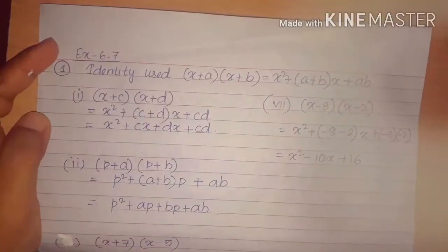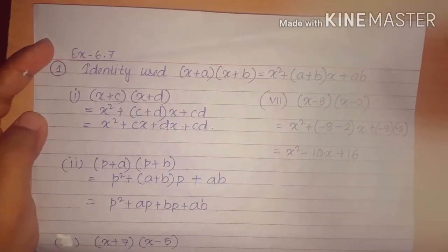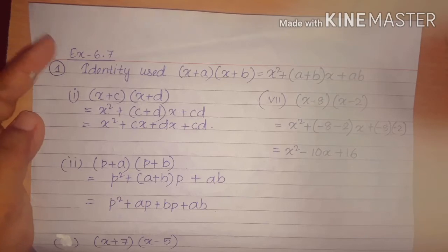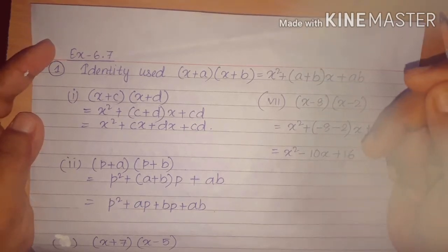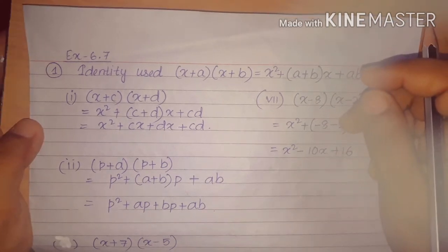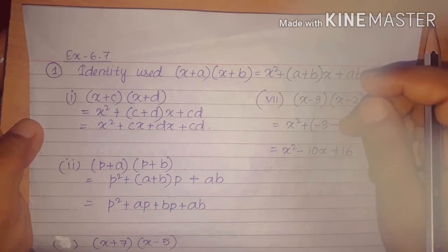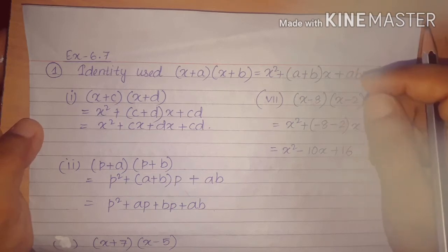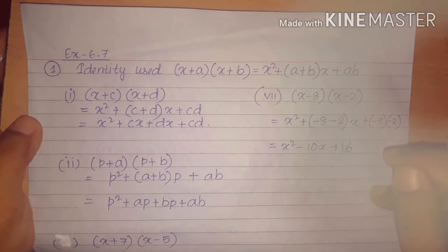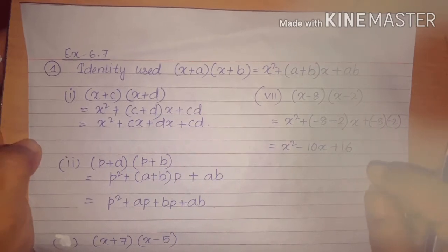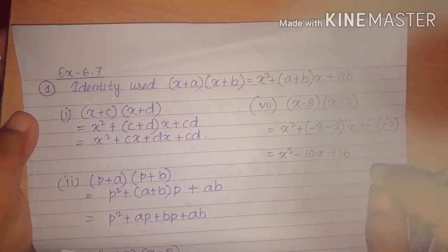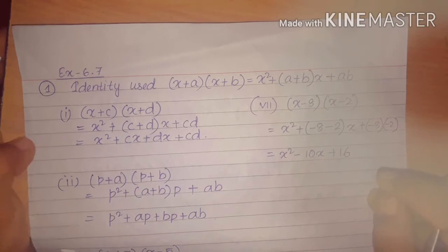Hello students of class 8. Today I am going to discuss the next exercise, that is exercise 6.7. In the last lecture I discussed the identities — I derived the formula for two identities. There are many identities, and you have to remember all of them to do the questions. In 6.7 and 6.8 you have to do the questions using identities. So let us start.